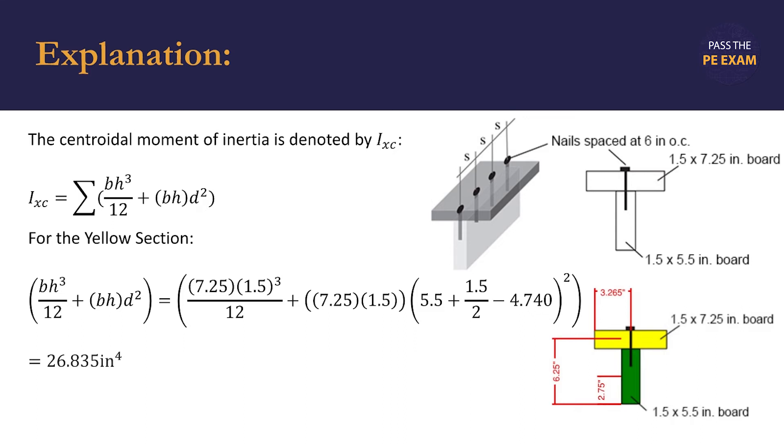Simplifying, we find that the centroidal moment of inertia for the yellow section is 26.835 quartic inches.